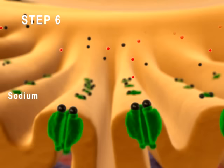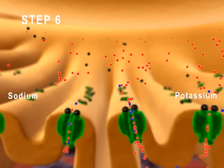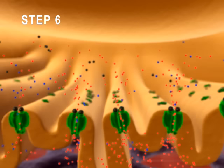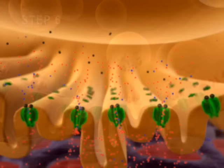Step 6: Sodium ions, shown here in red, enter the muscle fiber and potassium ions, shown here in blue, exit the muscle fiber. The greater inward flux of sodium ions relative to the outward flux of potassium ions causes the membrane potential to become less negative.